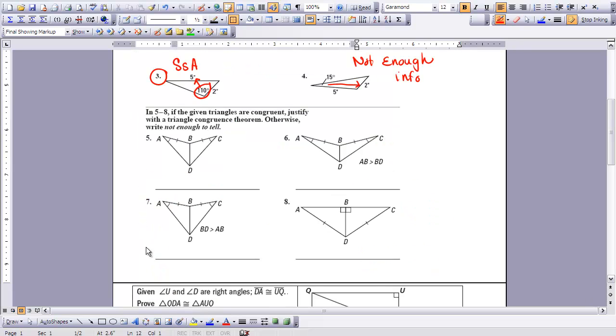In part, in these four examples here, it says, if triangles are congruent, justify with the triangle congruence. They are otherwise right, not enough to tell. So let's take a look here. We are given a set of angles, a set of sides, and we know that these sides would be congruent to each other because of the reflexive property. So we have a situation where it would be side-side angle, but there's nothing here to tell us if the side across from the angles that we know is the largest side. So we would say not enough to tell.